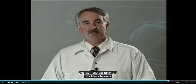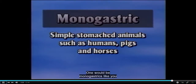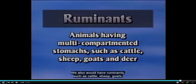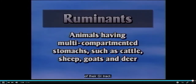We can divide animals into two classes. One would be monogastrics, like humans, that have a simple stomach — including pigs and horses. We also have ruminants, such as cattle, sheep, goats, and deer, which have a multi-compartmented stomach and consume different feedstuffs because of their GI tract.